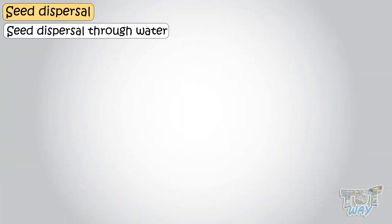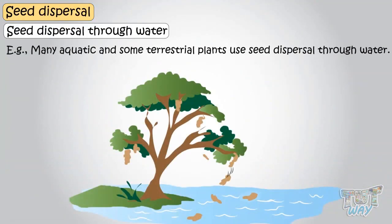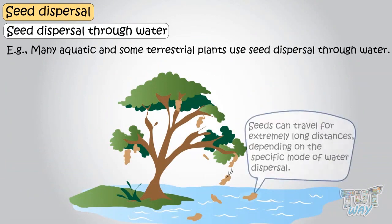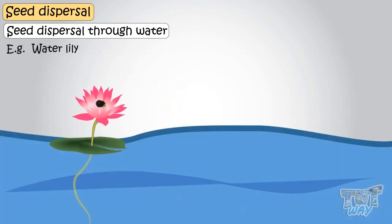Water. Many aquatic and some terrestrial plants use seed dispersal through water. Seeds can travel for extremely long distances, depending on the specific mode of water dispersal. Water lily. The water lily is an example of such a plant. Water lily's flowers make a fruit that floats in the water for a while and then drops down to the bottom to take root on the floor of the pond.